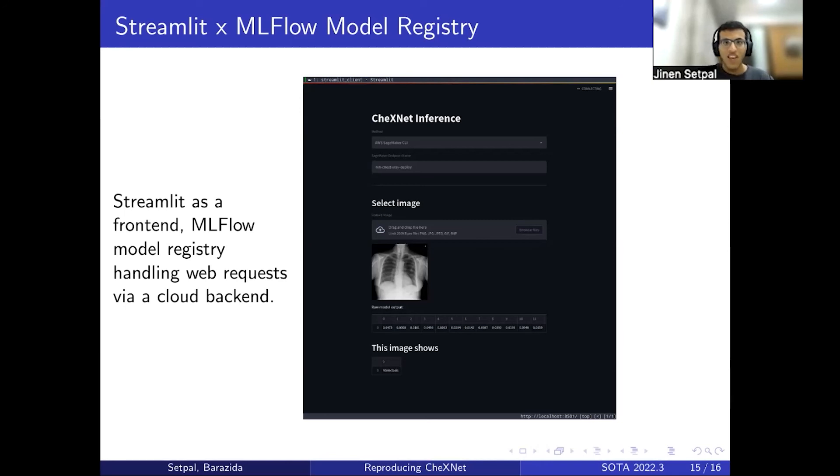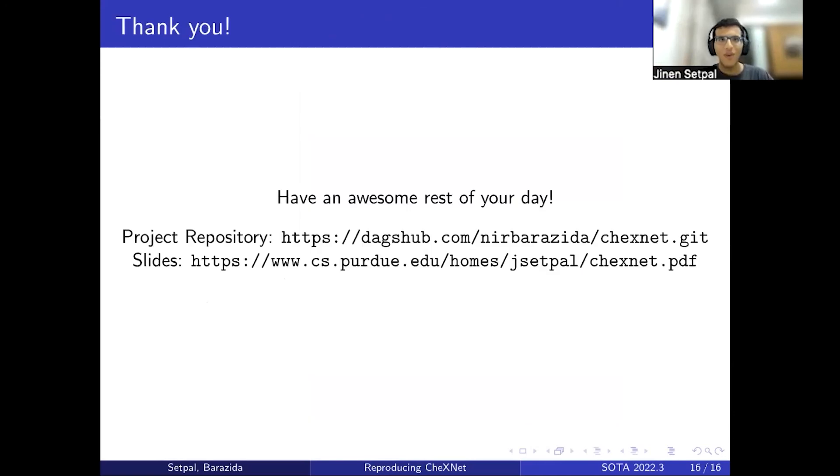Since we're using a direct HTTP server that outputs the classification itself, you could theoretically just send a curl request to the server and get your final output back, which is super cool. That's what I have for you today. Have an awesome rest of your day. The project repository is on dagshub.com/neerbarazida/chexnet.git, and the slides are at cs.purdue.edu/homes/jsetpal/chexnet.pdf. Thank you so much.